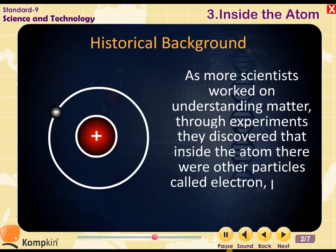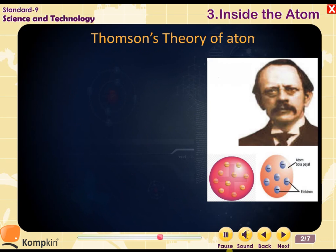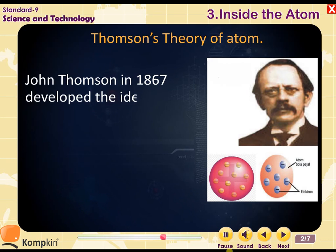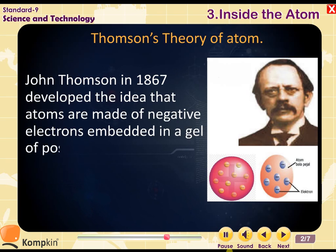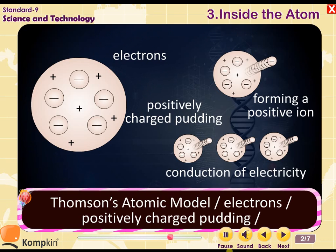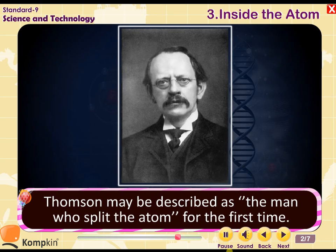As more scientists worked on understanding matter through experiments, they discovered that inside the atom there were other particles called electrons, protons, and neutrons. John Thomson, in 1867, developed the idea that atoms are made of negative electrons embedded in a gel of positive charge — the plum pudding model.